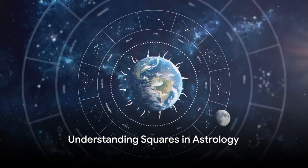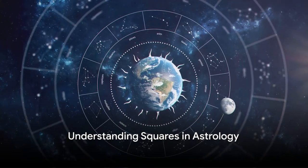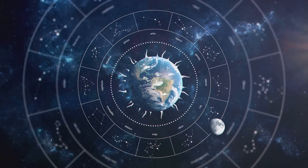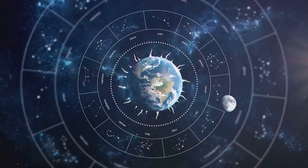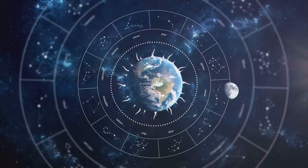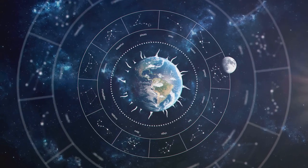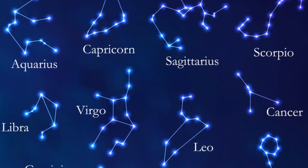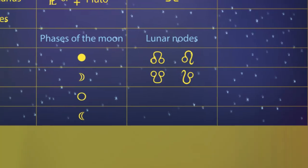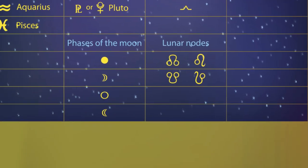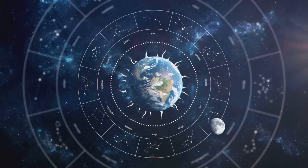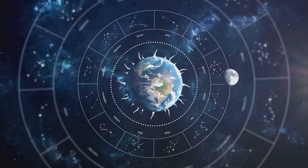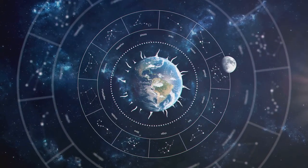Last but not least, squares. Envision two planets 90 degrees apart. This is a square. Squares represent tension and conflict, but also motivation and action. They occur between signs that are fundamentally different in element and modality. This clash can create friction and tension, but it can also spark motivation and drive.